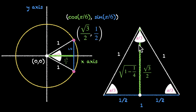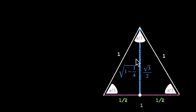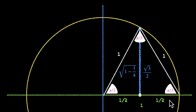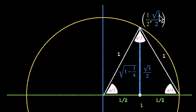Because this triangle also has pi by 3 (60 degrees), we can use the same triangle to figure out cos and sine of pi by 3. Let's move this triangle and place it on the x-axis. On the unit circle, we have a point that makes an angle of pi by 3 with the x-axis, and the coordinates of that point give us cos and sine of pi by 3. Its x-coordinate is 1/2 and its y-coordinate is root 3 by 2, so we also now know cos and sine of pi by 3.